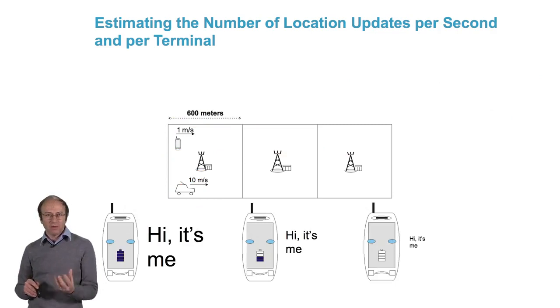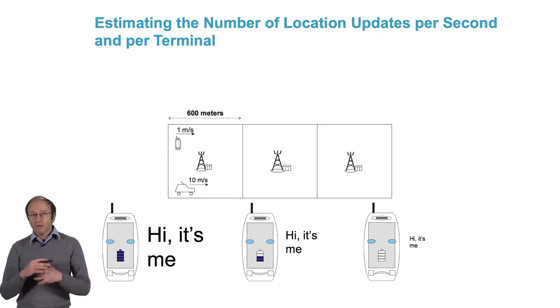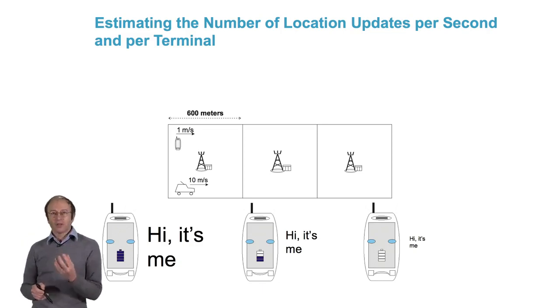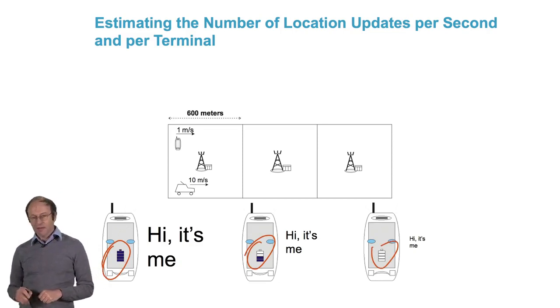If every minute, even if I'm not using my terminal, it updates its location, it's going to transmit and receive messages from the base station and consume energy, even though I'm not doing anything. At the end of the day, my battery will be dead, perhaps before the end of the day. So, we are going to try to reduce the frequency of the location updates.